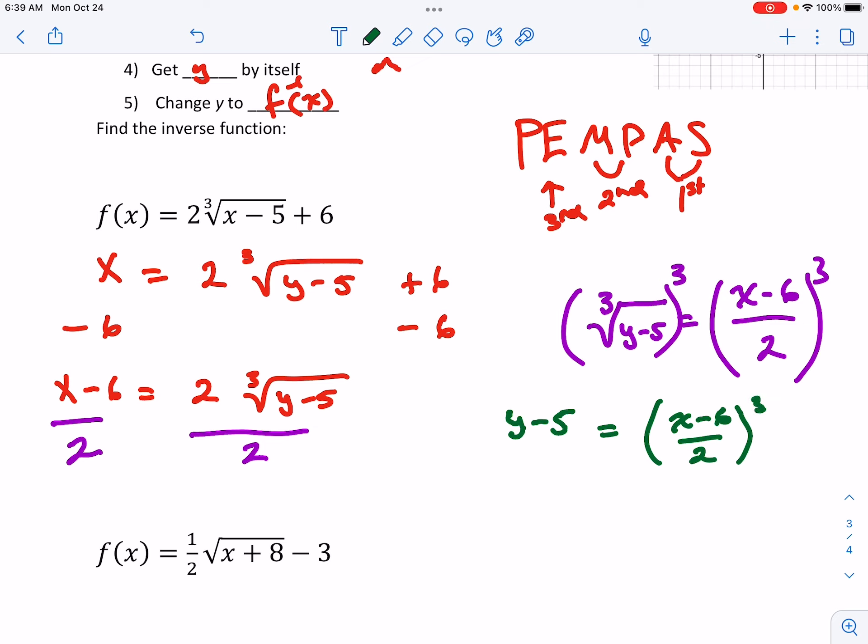Now we'll raise both sides to the power of three. And we'll get y by itself by adding five to both sides. And last of all change your y to f inverse of x.